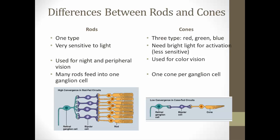Now let's look at differences between rods and cones in more detail. There's only one type of rod, but there are actually three types of cones, and these four photoreceptor cells differ by how sensitive they are to light.